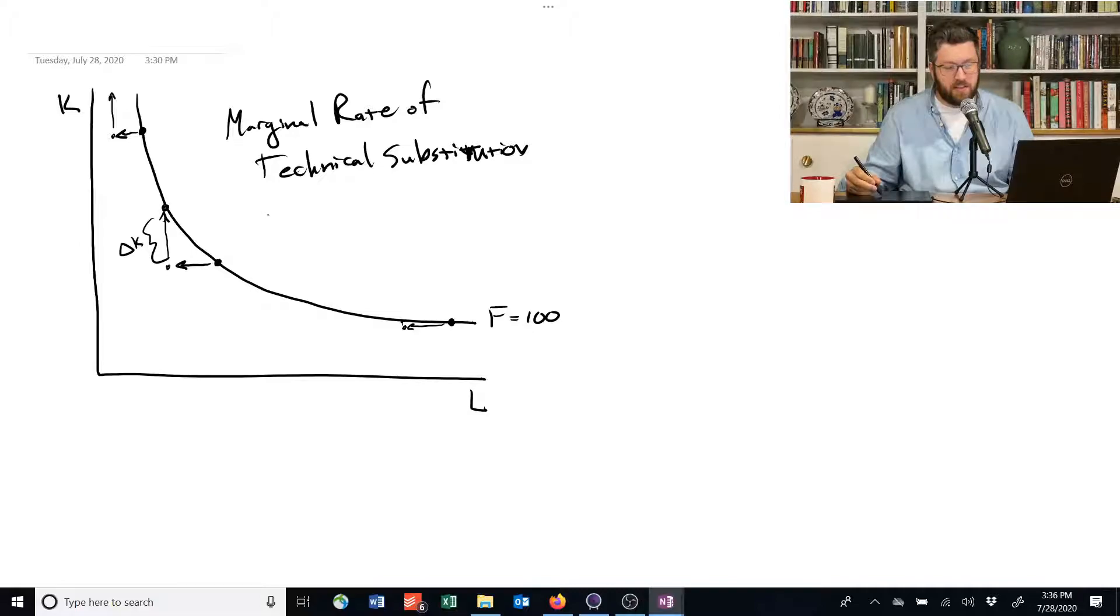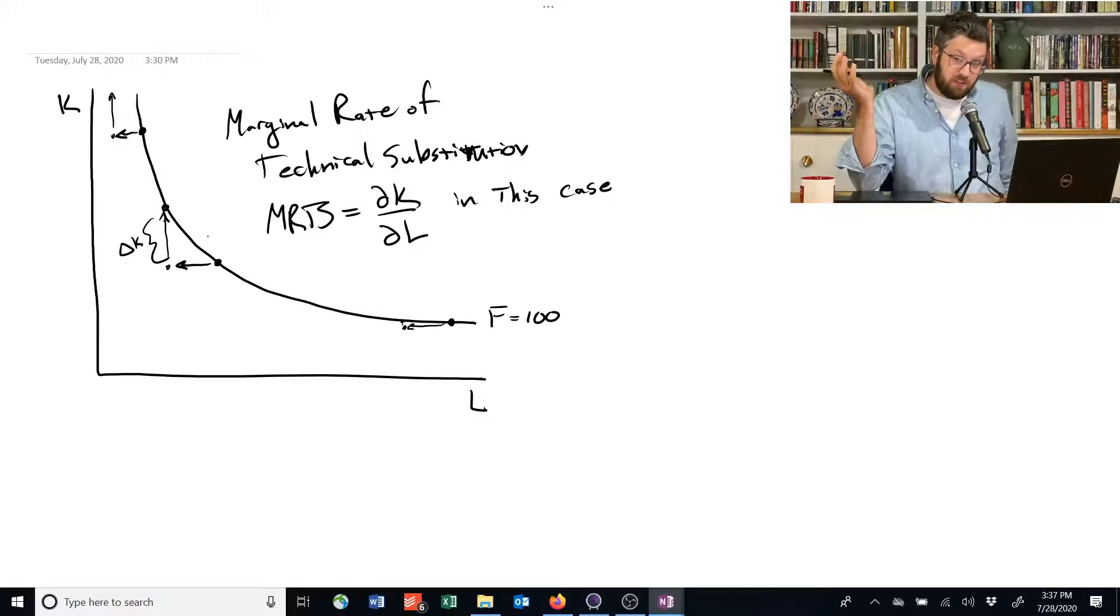Technically, we can call this MRTS, and it can be defined as the slope of the isoquant. Now, the slope in this case is the partial derivative of K with respect to L, but that's only because I chose at the very beginning to draw K on the vertical axis and L on the horizontal. I could have gone the other way, in which case the marginal rate of technical substitution would be the partial derivative of L with respect to K.